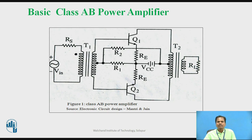Resistor RE is used to stabilize the DC operating point of transistor Q1 and Q2 and reduce distortion in the output AC signal. The input AC signal is coupled to the input of Class AB power amplifier using driver transformer T1 whose secondary is centre tapped. So driver transformer T1 produces two voltage signals of equal magnitude and opposite polarity to drive transistor Q1 and Q2.